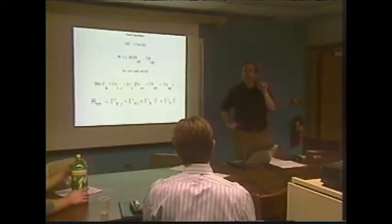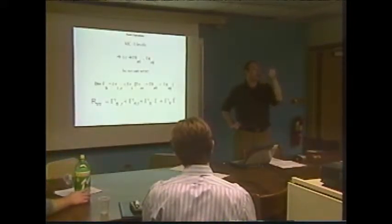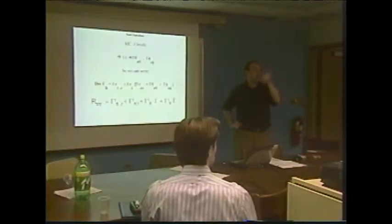Phi, which is the potential, is also this function in front of the dt squared.